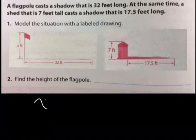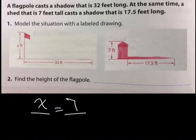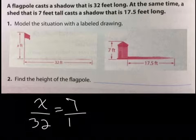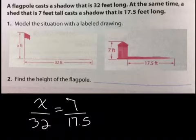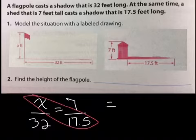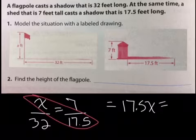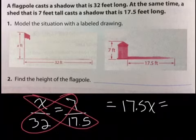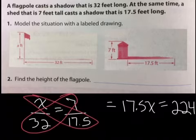Find the height of the flagpole. Well, I know that my flagpole is X, but I know that my shed is seven, right? And I know that my shadow for the flagpole is 32 feet, and the shadow for my shed is 17.5. You can go ahead and cross product. So now I have over here on the side, I'm going to have 17.5X equals 32 times seven, or seven times 32, which equals 224. Always keep in mind, you can use a calculator.